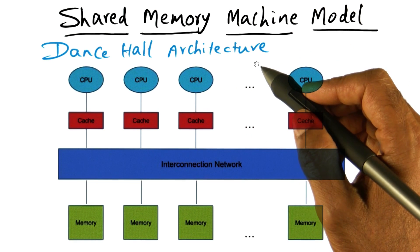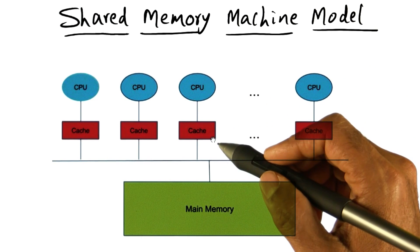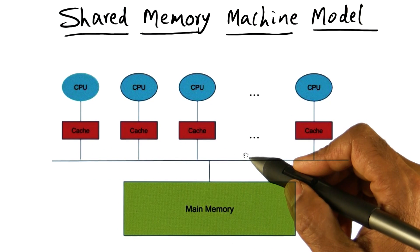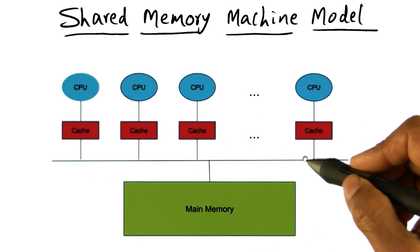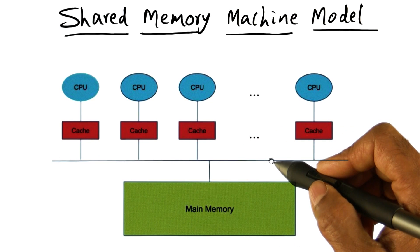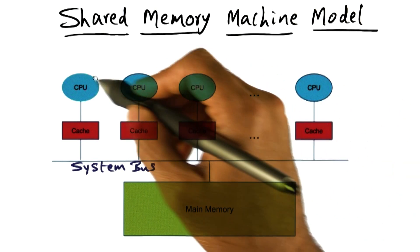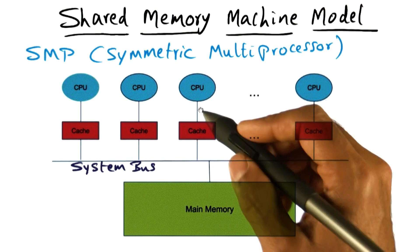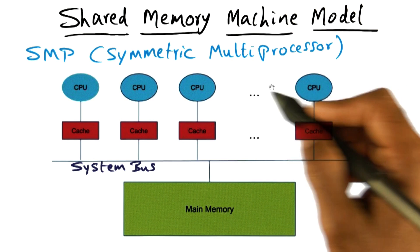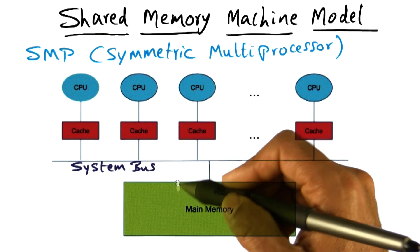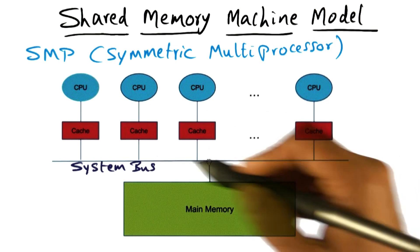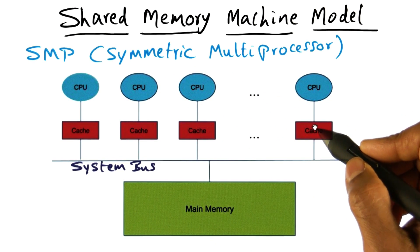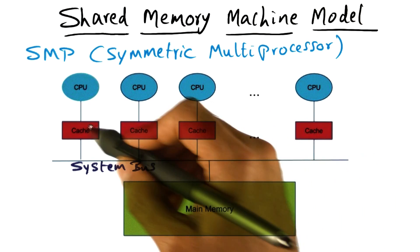The next style is called an SMP architecture, or symmetric multiprocessor. Here the interconnection network from the dance hall architecture is simplified considerably, showing a simple system bus that connects all the CPUs to the main memory. It is symmetric because the access time from any of the CPUs to memory is the same. That's the idea of the system bus that allows all these CPUs to talk to the main memory. The other thing you'll notice is that every CPU comes equipped with a cache.